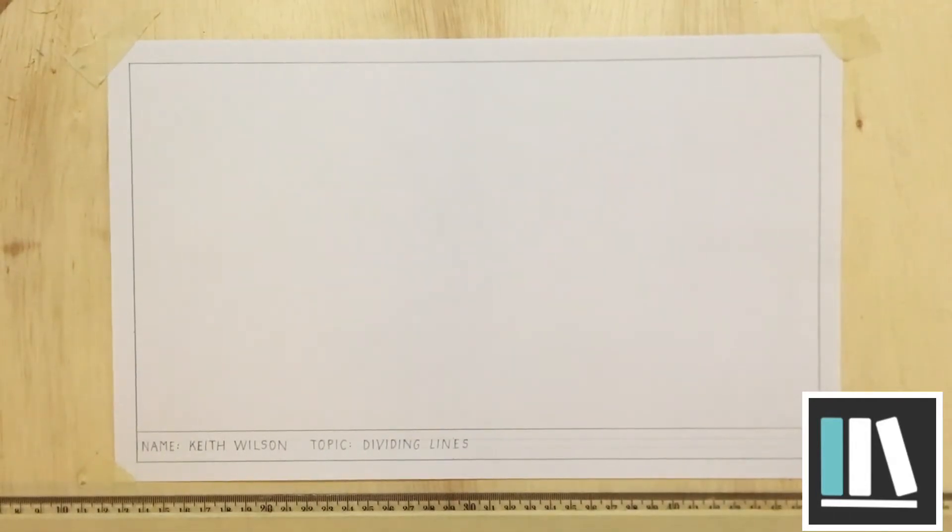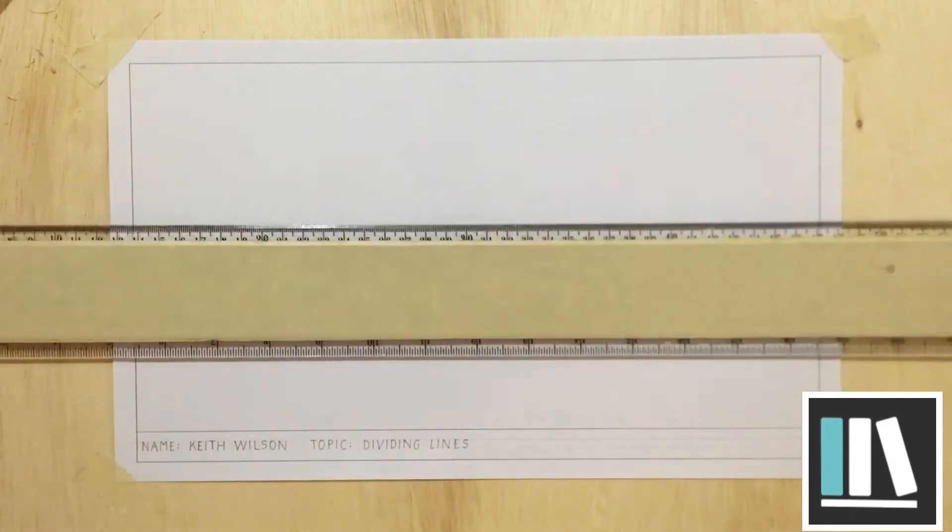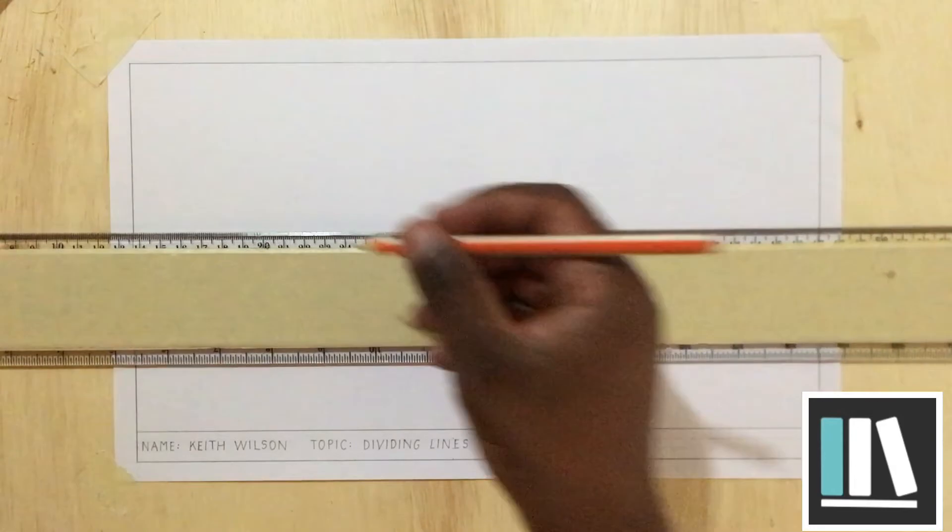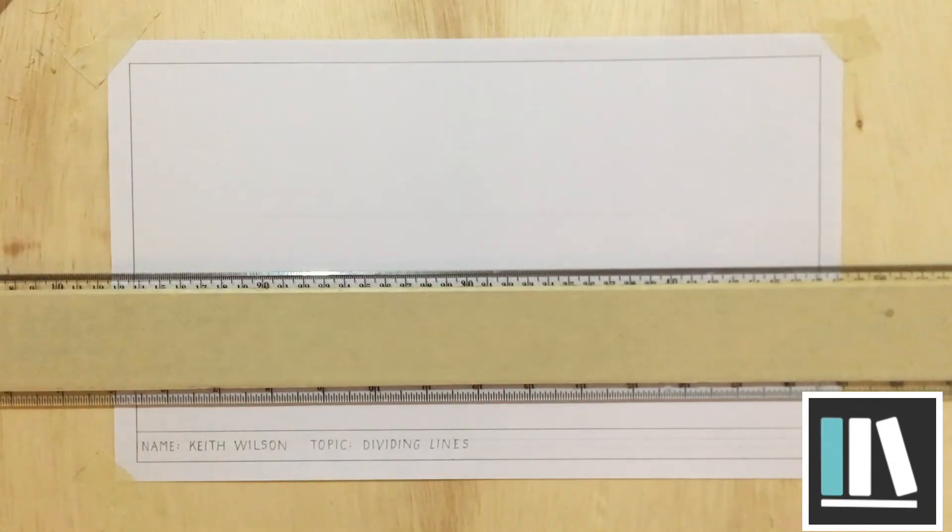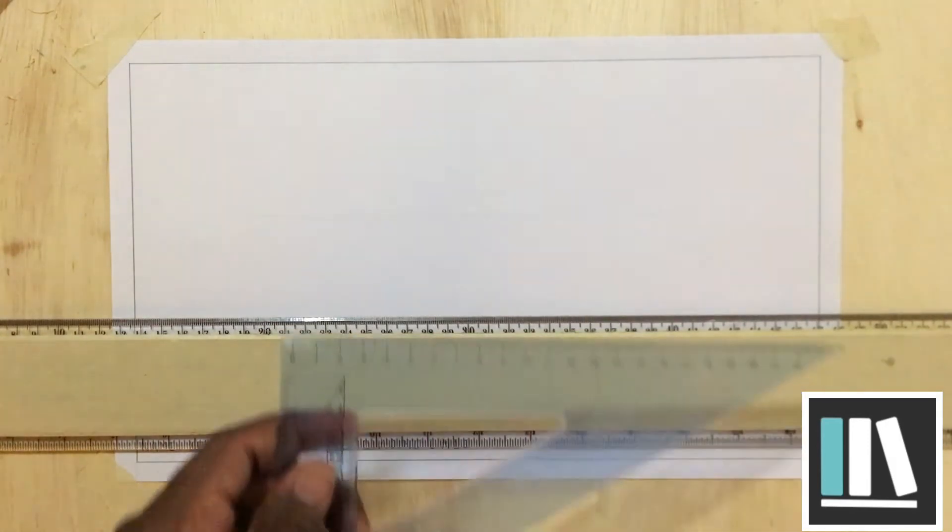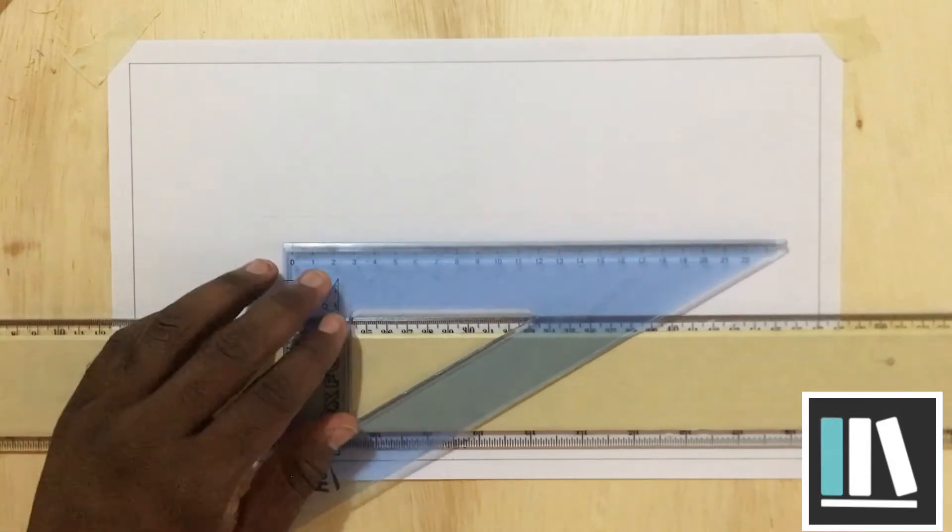Okay, so the line that we are going to bisect today will measure 10 centimeters or 100 millimeters. And we will bisect this line in five equal parts. Now let's go ahead and draw the line. Remember when drawing lines in technical drawing, we firstly draw a construction line. Now you are going to estimate this construction line. In drawing this, it should be longer than the line that you intend to draw.